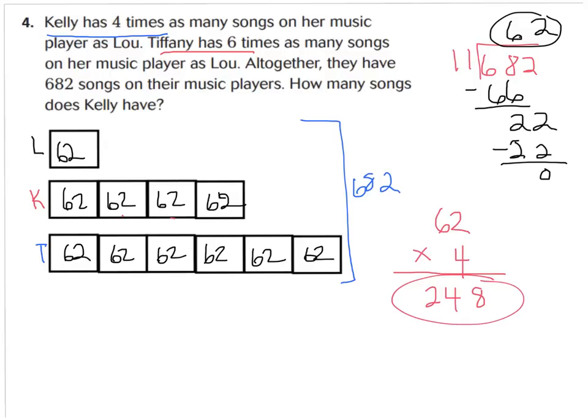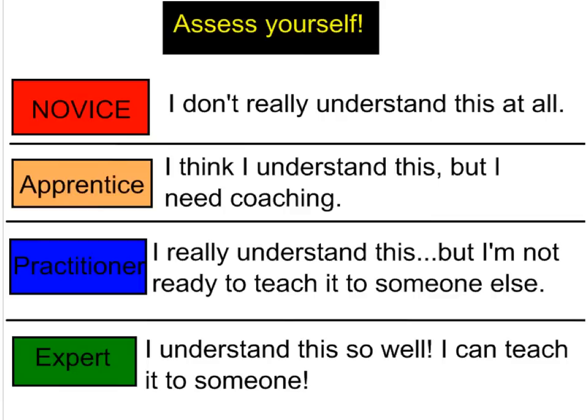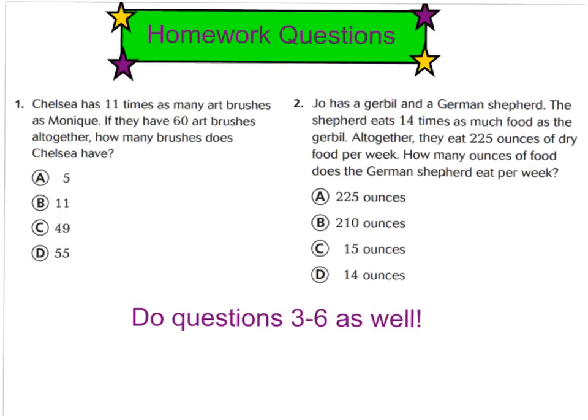Go ahead and turn your paper over to the back side now. Let's take a look at your two homework questions. I want you to work it out carefully, showing your models of drawing a diagram to figure out these answers to these two questions. If you need to remember how to do it, you can go back and look at questions 1 through 4 that we did together. Please don't forget to rate yourself as level 1 for novice if you don't really understand this, 2 for apprentice if you think you understand this but you need me to walk you through it for coaching, 3 for practitioner if you really understand this but you're not ready to teach it, or 4, expert, if you understand this so well you can teach it to someone else. Again, here are your two questions. Please take your time, work them out, and also do questions 3 through 6. We'll check these six questions together in class tomorrow. Have a great night. Bye-bye.